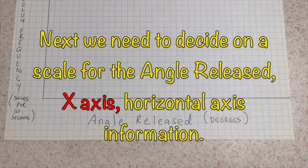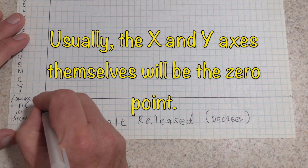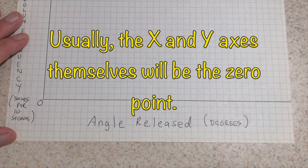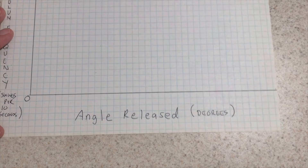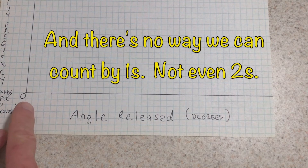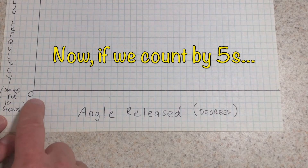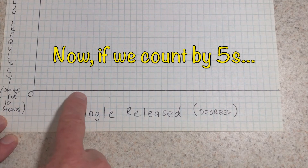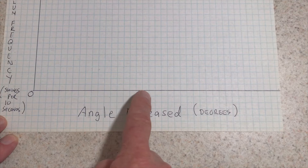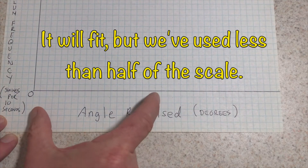Next, we need to decide on a scale for the angle-released x-axis, horizontal axis information. Usually, the x and y axes themselves will be the zero point. In this case, we need to get up to 90 for angle-released. There's no way we can count by ones, not even twos. If we count by fives, we can get there, but we've used less than half of the scale.